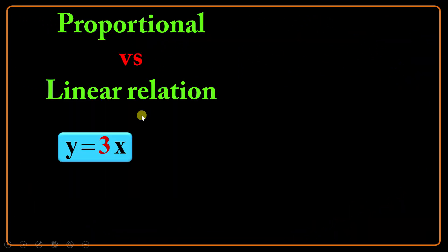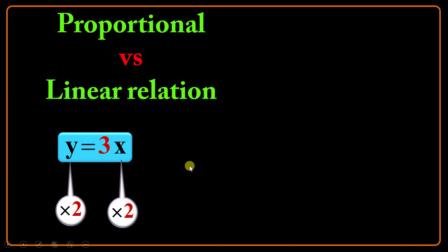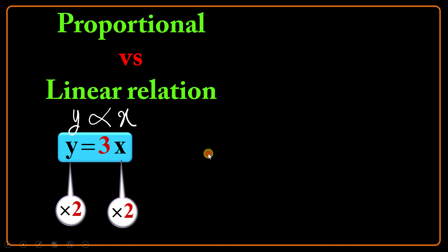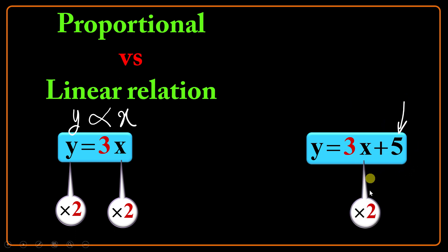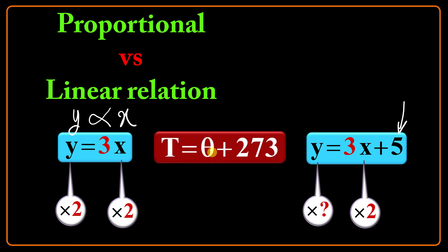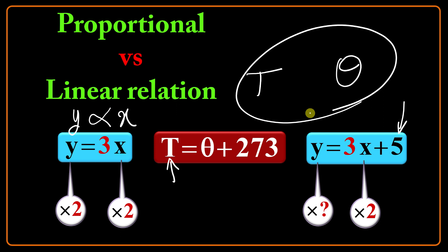Proportional versus linear relation. Suppose I have an equation like y equals 3x. If I multiply x by 2, I can say simultaneously I have multiplied y by 2 also. On the other hand, I may have an equation like y equals 3x plus 5 with a y-intercept. Here, if I multiply x by 2, I can't say I have multiplied y by 2 — I should calculate it. An example could be the Kelvin and Celsius temperature: T equals theta plus 273. T and theta have a linear relation, but they are not proportional, because if I multiply theta by 10, I can't say I have simultaneously multiplied T by 10 — I should calculate it.